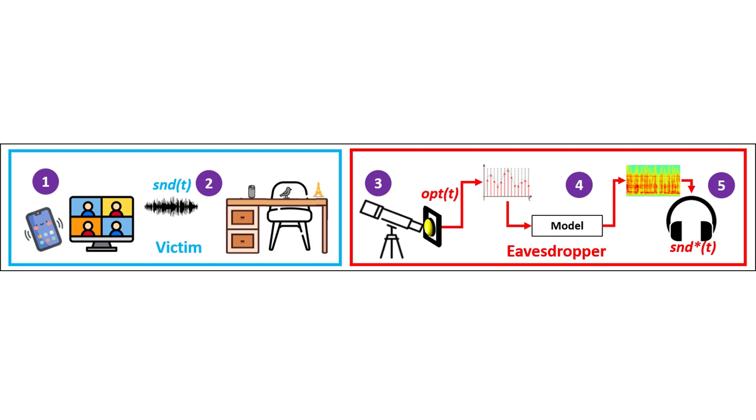We show that eavesdroppers can recover sound from lightweight shiny objects by analyzing the fluctuations in the air pressure on the surface of such objects.